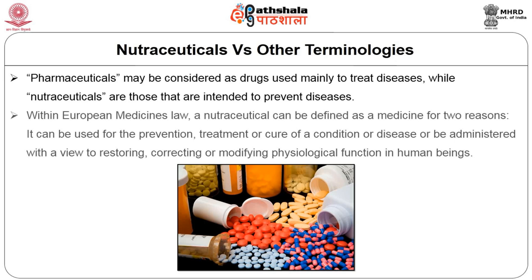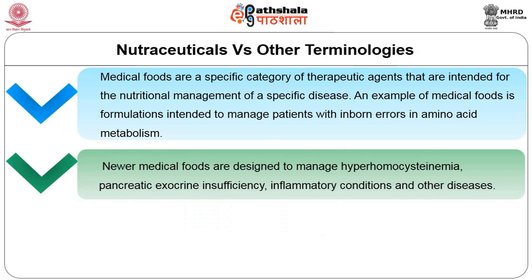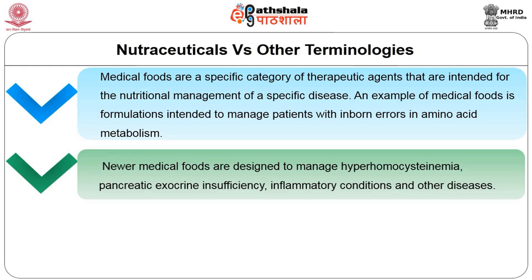Within European medicine law, a nutraceutical can be defined as a medicine for two reasons: one, it can be used for the prevention, treatment or cure of a condition or disease, or be administered with a view to restoring, correcting or modifying physiological function in human beings. Medical foods are a special category of therapeutic agents intended for nutritional management of a specific disease. Examples include formulations intended to manage patients with inborn errors in amino acid metabolism, like phenylketonuria, alkaptonuria and albinism. Numerous medical foods are designed to manage conditions like hyperhomocysteinemia, pancreatic exocrine insufficiency, inflammatory conditions and other diseases.